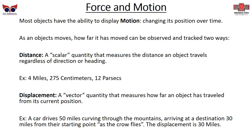Now pivoting to force and motion: most objects have the ability to display motion, which is changing position over time. How far an object has moved can be tracked in two ways. Distance is a scalar quantity — it only has a magnitude and measures the distance an object travels regardless of direction. So you might say you ran four miles, or measured 275 centimeters — these are distances with no reference to direction.